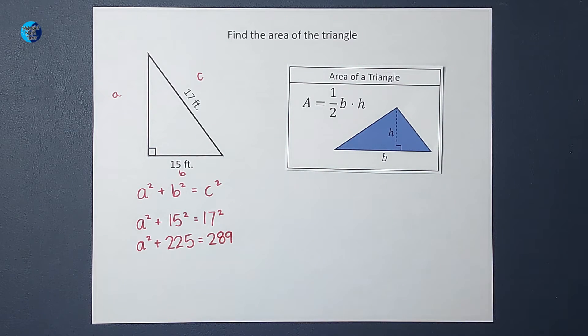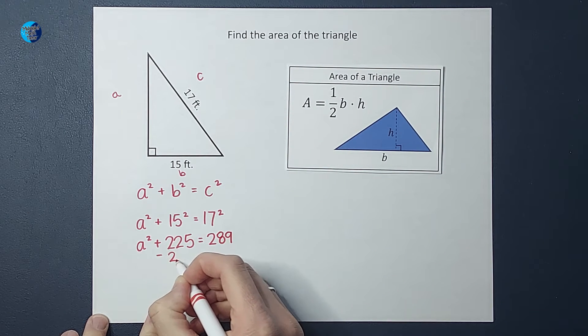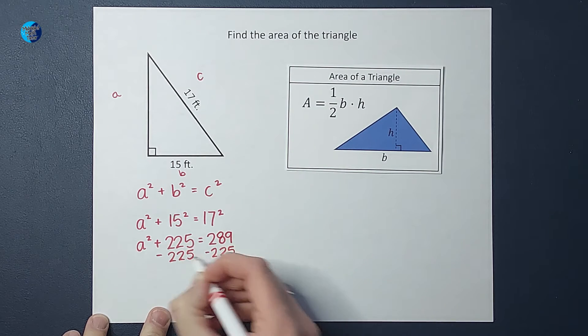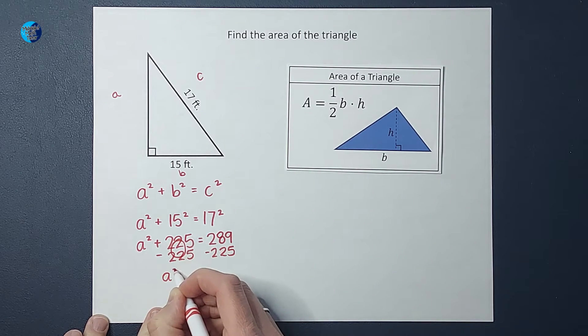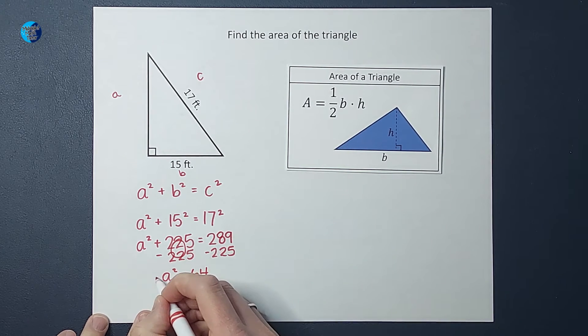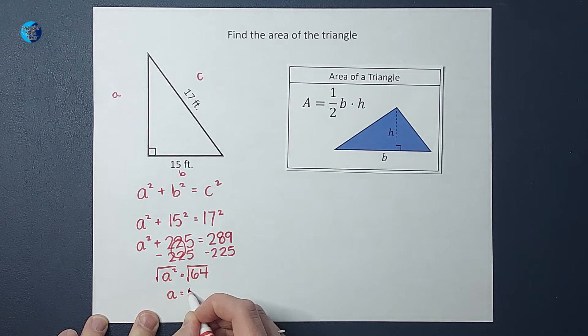Okay, not too bad so far. Next thing I'm going to do is I want a alone, right? That's the whole point of doing this. So I'm going to subtract 225 from both sides, and I end up with a squared equals 64. Then I need to get rid of that squared, so we take the square root of both sides, and I end up with a equals 8.